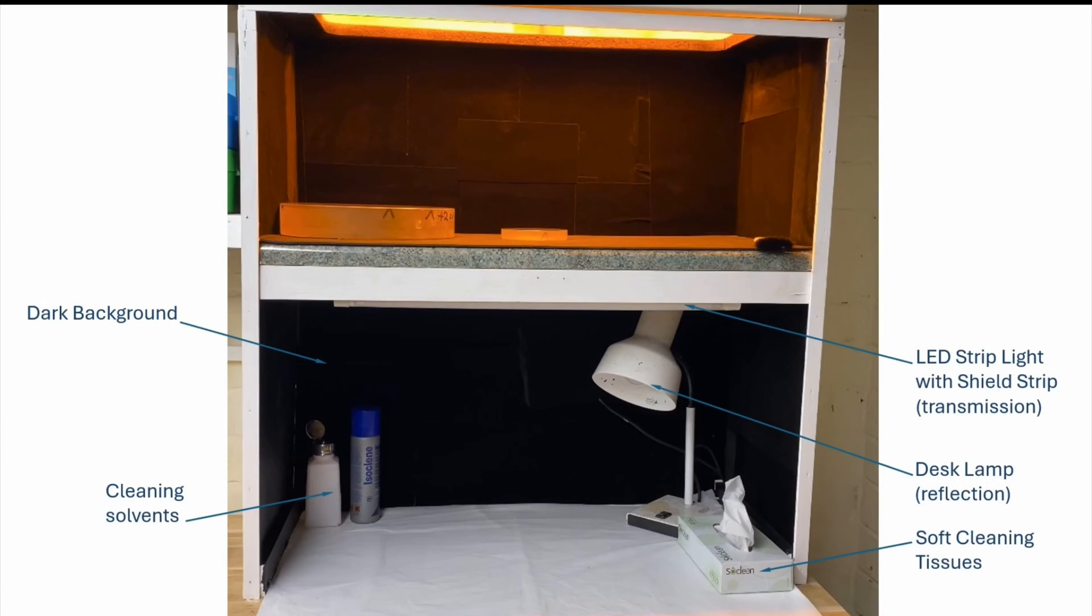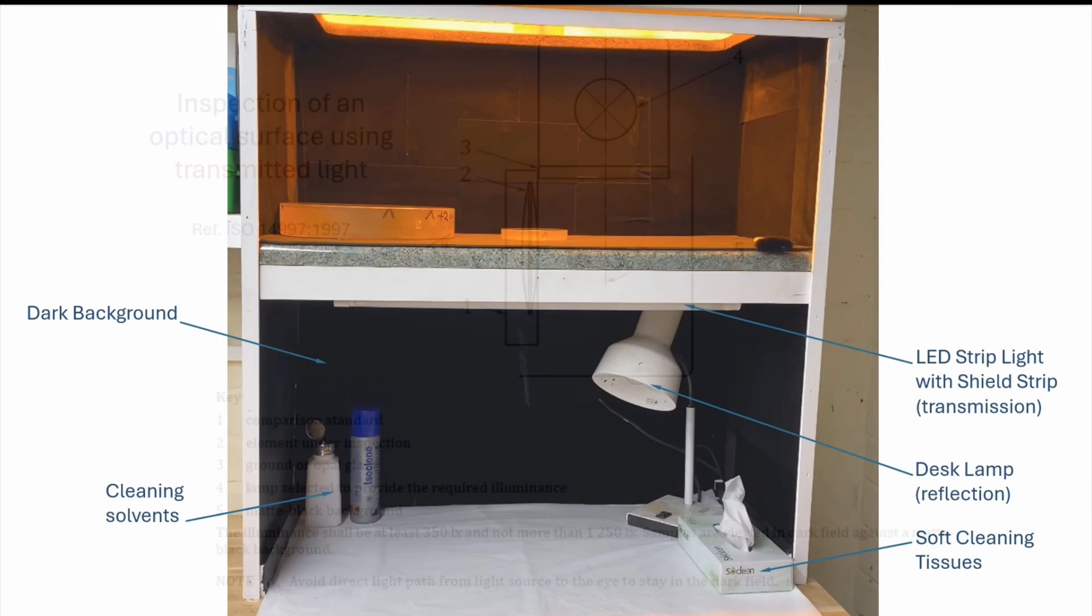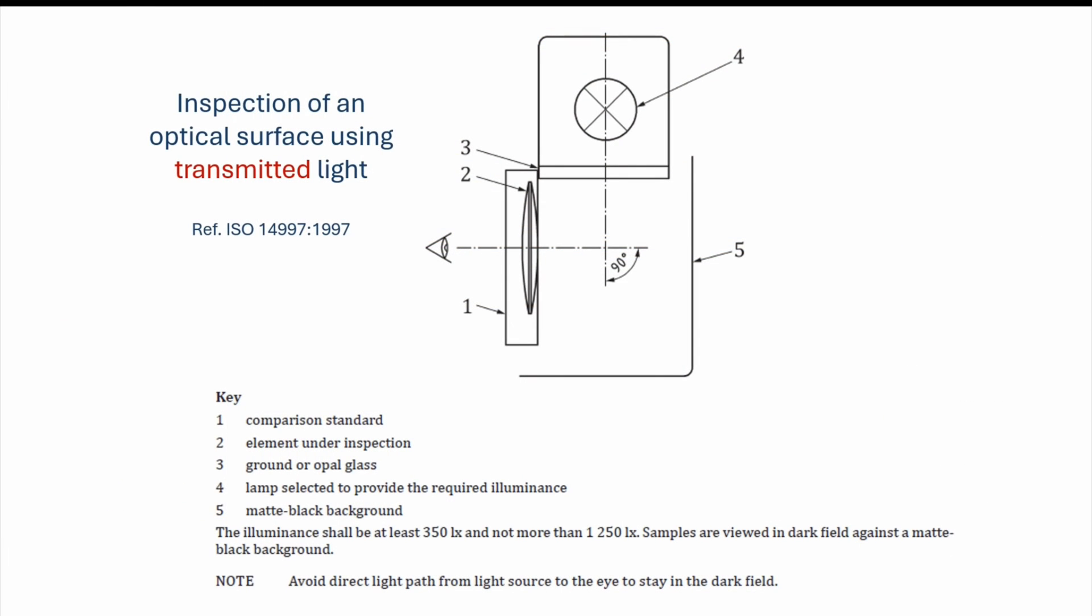Let's have a quick look at the booth. The lower section is intended for inspecting the surface quality of optical surfaces. We're really looking for things like scratches and digs or edge chips. To do that effectively you need to have a dark background with an illuminated foreground. For transmission, if you're inspecting in transmission, you need the strip light at the front there.